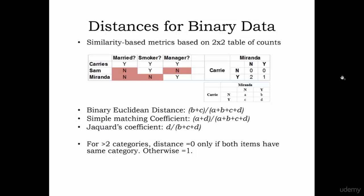If you were to find out the distance between binary data, this is how you'll be calculating that. Distances for binary data. Say you have Carrie, Sam, and Miranda. Think about these as three different universities and think about these three as your features: Married, Smoker, and Manager.